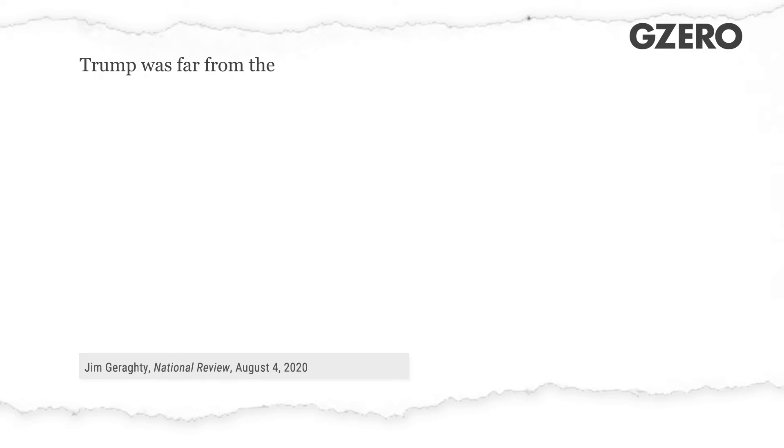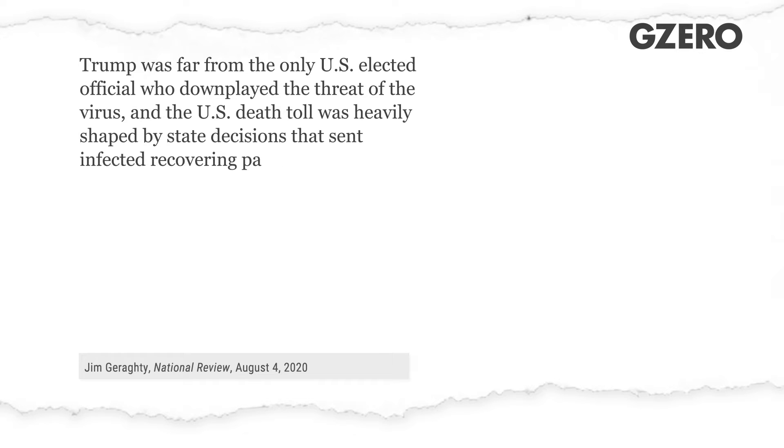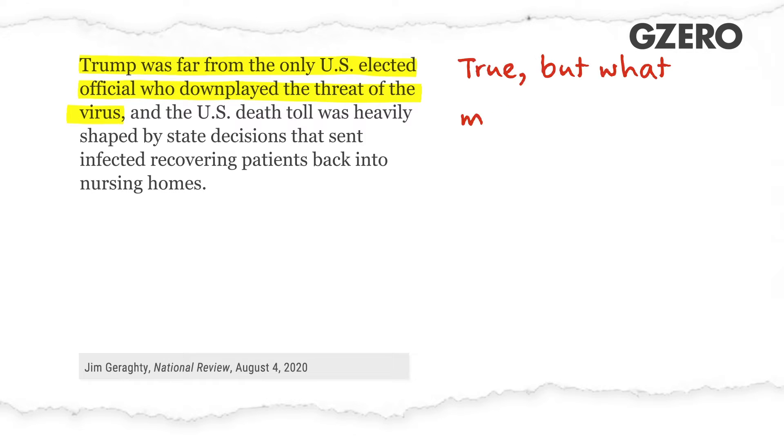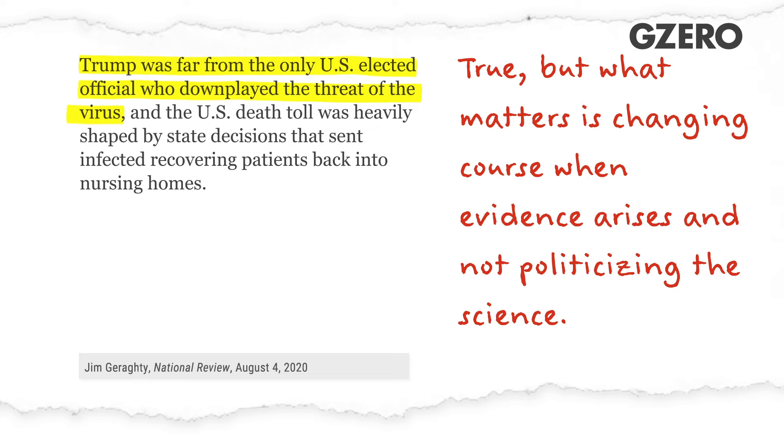And then finally, Geraghty suggests that blame should be spread out to include other leaders whose decisions were off the mark early. And I completely agree that leaders at all levels of American government made mistakes early on when information was scant, including governors like my own Andrew Cuomo in New York. The decision to reduce hospital strain and order nursing homes to take coronavirus patients early in the pandemic was a tragic mistake that led to unnecessary deaths. Almost half of the deaths in the New York City metropolitan area were in assisted living facilities — did not need to happen. You can't blame Trump for that. But what matters is whether leaders can change course as new information emerges and avoid politicizing the science. And that's where President Trump has come up short time and again.